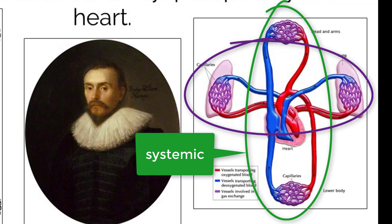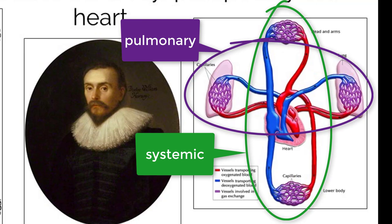Today we know this double circulation model is correct. Systemic circulation moves blood to the body and back, and pulmonary circulation moves blood to the lungs and back.